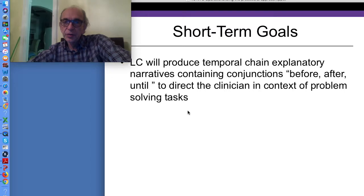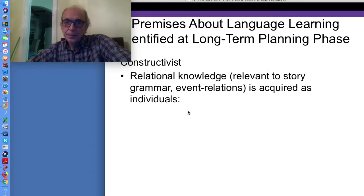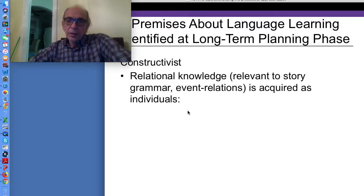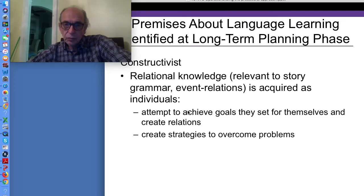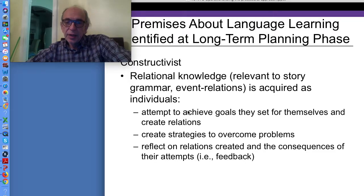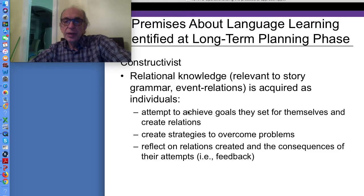Operationalizing the procedural approach for LC — we've reviewed the short-term goals. These are the premises we came up with at the long-term planning phase. We've said that relational knowledge relevant to story grammar and event relations is required as individuals attempt to achieve goals they set for themselves, create strategies to overcome problems, and reflect on relations created and the consequences of their attempts — that is, their feedback. We target relational constructs always — generative relational constructs.